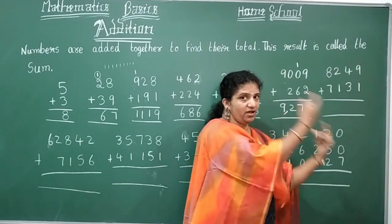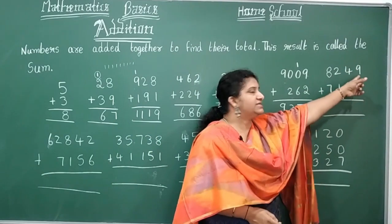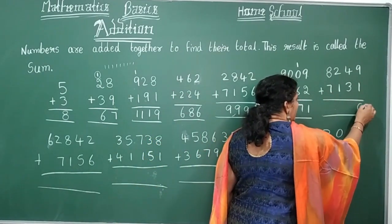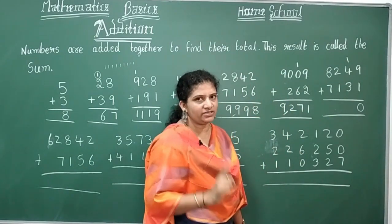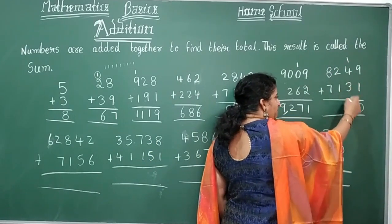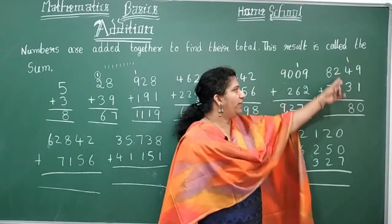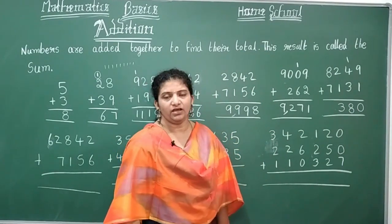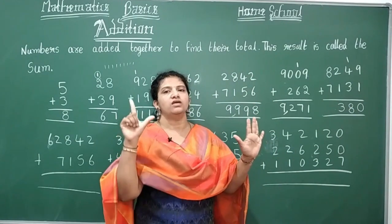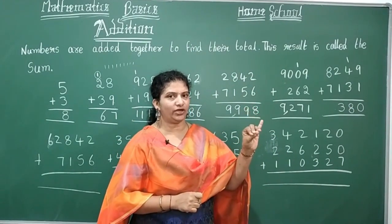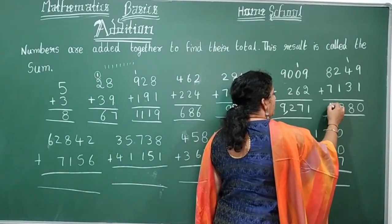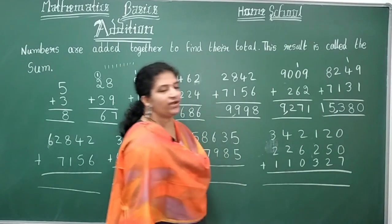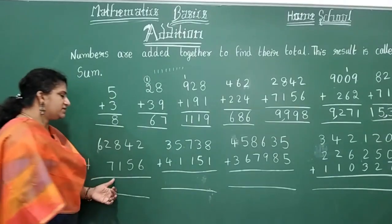Always start from the units digit. Nine plus one equals ten — units digit is zero, write zero, carry one. One plus four equals five, five plus three equals eight. Two plus one equals three. Eight plus seven — open seven fingers — eight, nine, ten, eleven, twelve, thirteen, fourteen, fifteen — write five, carry one. Total sum is fifteen thousand three hundred eighty.